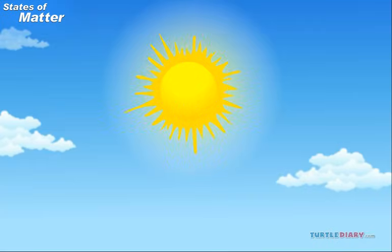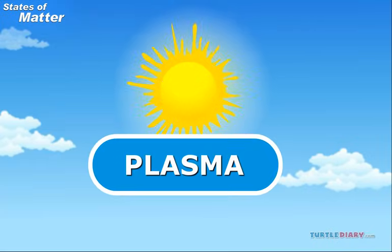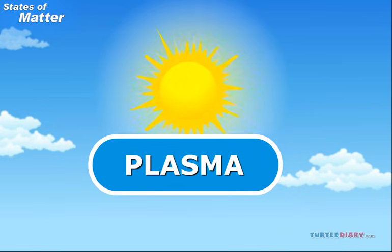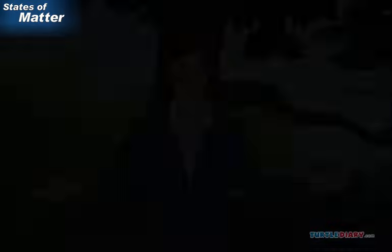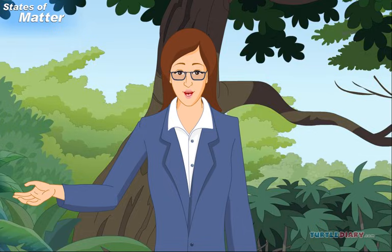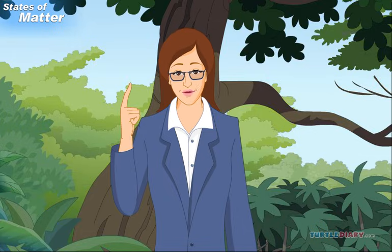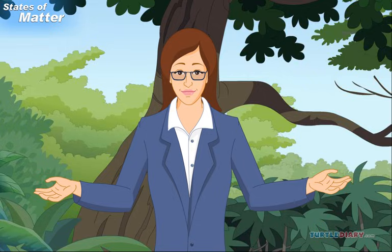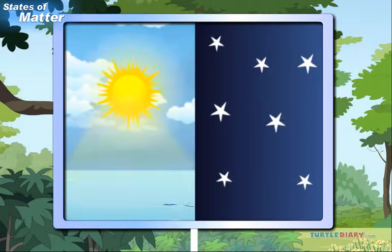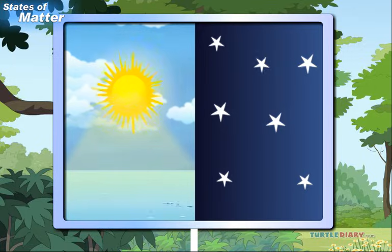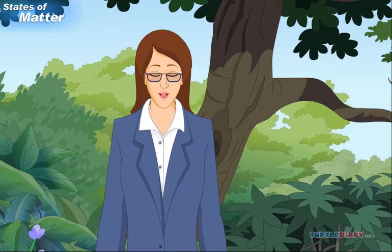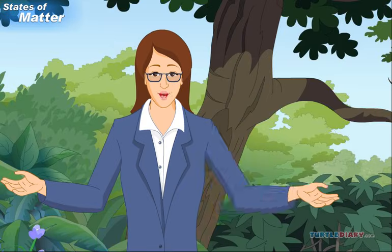There is another state of matter called plasma. Plasma is a gas that has been heated. It becomes charged with energy. The sun and the stars are made of plasma. Plasma is seen on Earth in lightning.